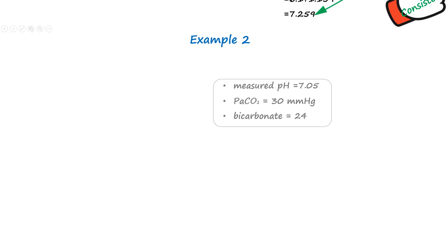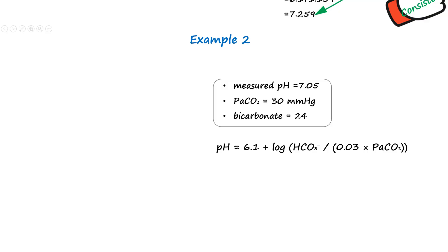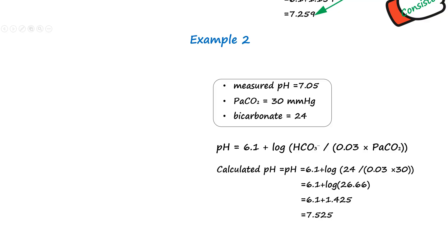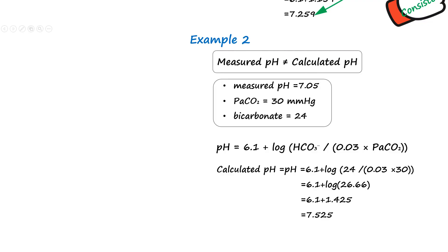Here's another example. Let's say the pH is measured at 7.05, the PaCO2 is 30 mmHg, and the bicarbonate is 24 mEq per litre. Using the Henderson-Hasselbalch equation, the calculated pH is 7.259. Thus, the calculated pH and the measured pH are showing a significant mismatch.